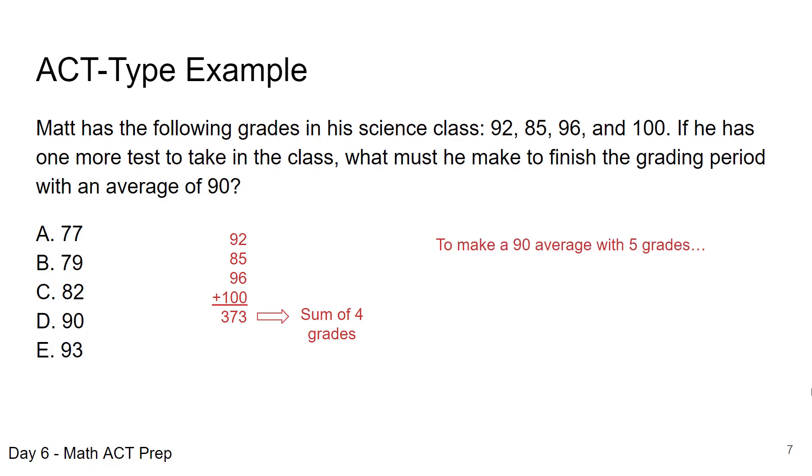If you make perfect on five grades on a 100-point scale, you can make 500 points. We want to take 90% of that 500 and that's going to give us 450. From that we already have 373 points, so we subtract the 373 from the 450 and we get 77. So Matt needs to make at least a 77 to get a 90 average.